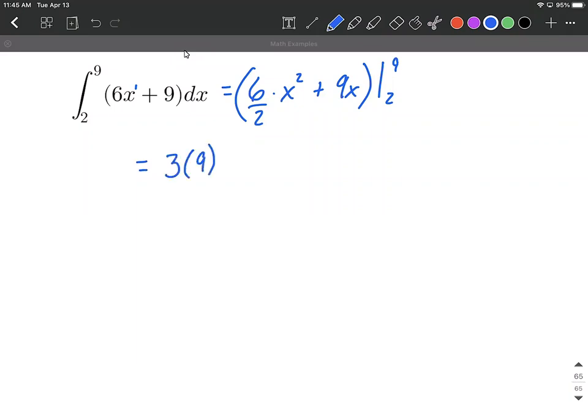Now I'm plugging in the 9, the top value, into each one of these x's. And then we want to subtract away when we plug in 2 for each of these. So again, I'm thinking 6 divided by 2 makes 3 multiplied by 2 squared plus 9 multiplied by 2.